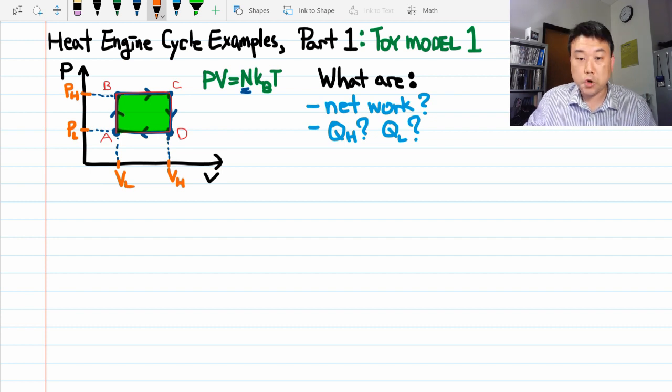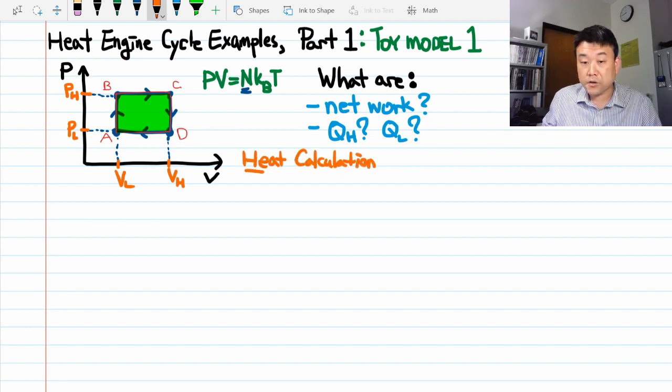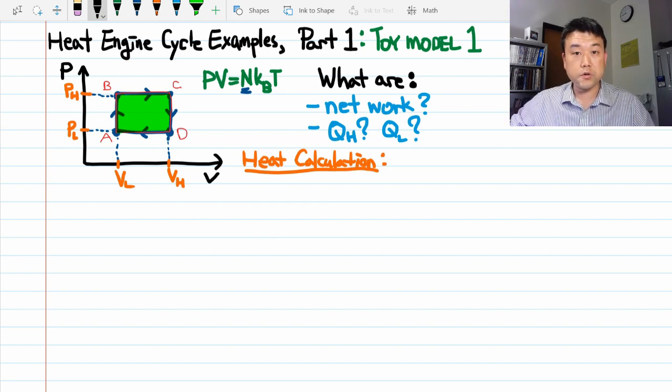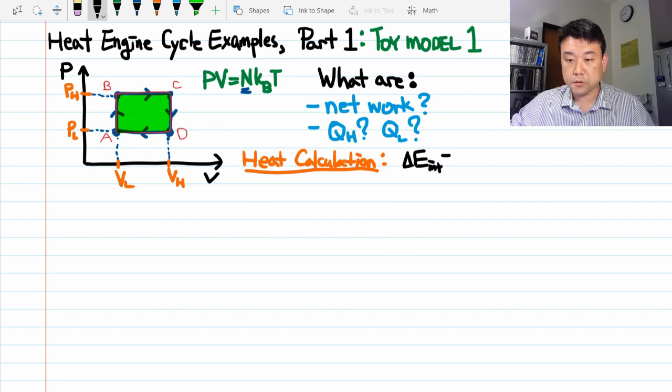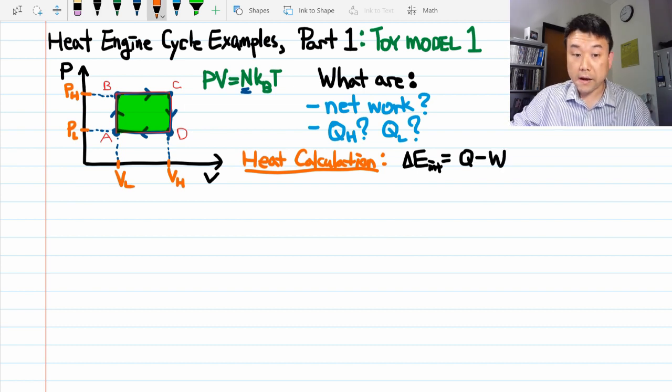So the point of the next 15 minutes or so is actually calculating the net heat flow. On this PV diagram, the information about heat isn't readily apparent here. So it must be calculated. This is where we are going to use the first law of thermodynamics. Change in internal energy is equal to net heat flow minus the work done by the system. Let's dig in.